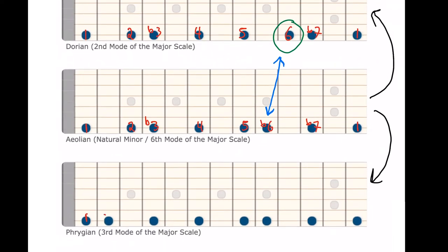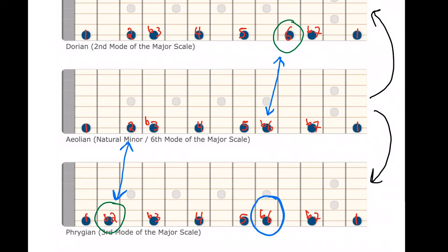Phrygian — the third mode — we can see right away: one, flat two, flat three, four, five, flat six, flat seven. That flat two is the oddity — it's what's different from natural minor. Yes, it also has flat six, but as a minor scale, the flat two is the defining characteristic of Phrygian.